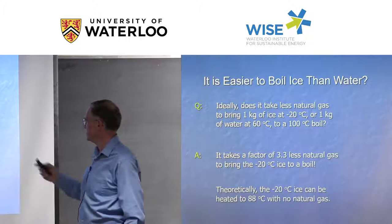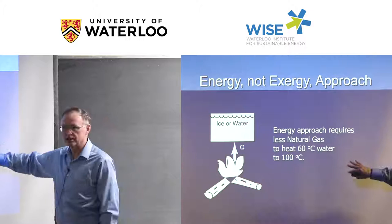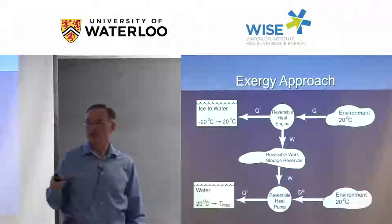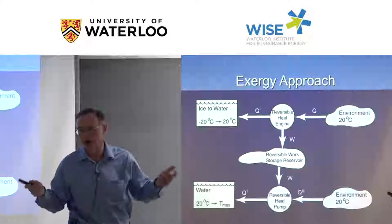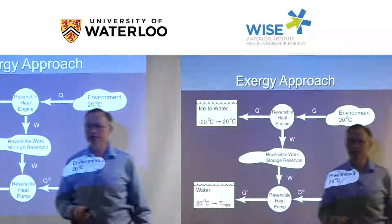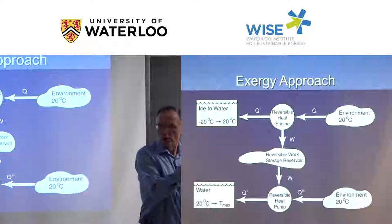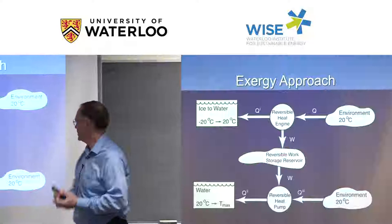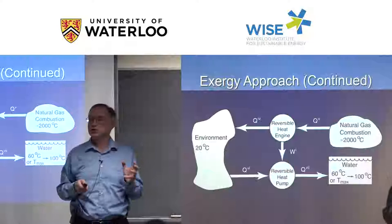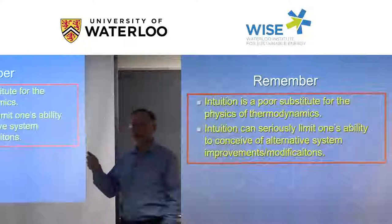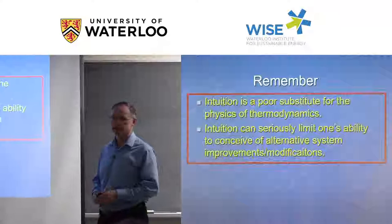The explanation involves a more complex exergy-conserving system with a heat pump and a heat engine or power plant. You first bring the water from minus 20 to 20 degrees Celsius, collect the work in a storage reservoir — work you could use to light a bulb or lift a weight — then use that stored work to heat it to 100 degrees. This illustrates that intuition is a poor substitute for thermodynamic theory, and that it can seriously limit your ability to conceive of better systems.